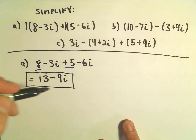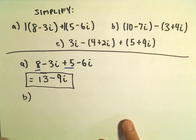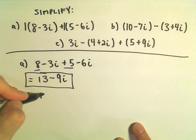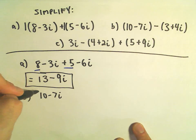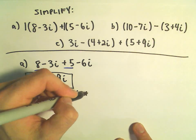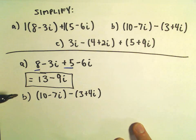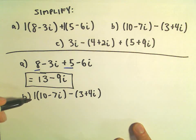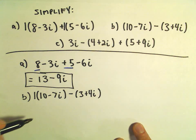So, again, nothing too bad. In part b, we have 10 minus 7i minus 3 plus 4i. So, again, in this case you can think about there being a positive 1 out front and also a negative 1 in the second term.